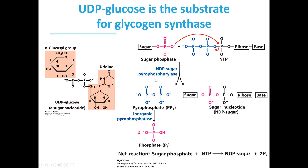To understand what drives the UDP glucose formation: glucose-1-phosphate plus a nucleotide triphosphate combine to give us UDP glucose, breaking off a pyrophosphate. This pyrophosphate is almost instantaneously converted into two inorganic phosphate molecules, which is a highly exergonic reaction. The breakdown of the pyrophosphate is actually what drives the combination of glucose-1-phosphate and the nucleotide triphosphate to form our UDP glucose.